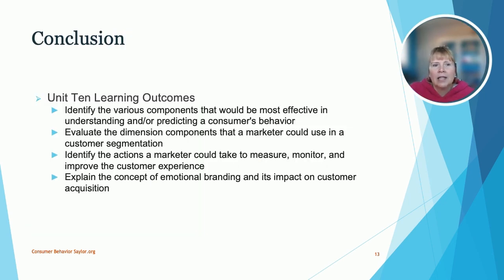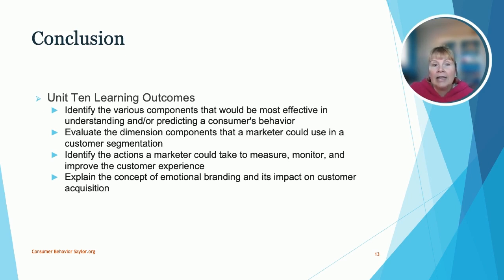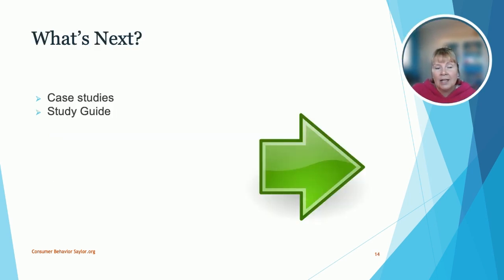In conclusion, here are the Unit 10 learning outcomes. We talked about how you might predict a consumer's behavior. We also looked at the different segmentation of customers and how you can narrow down that target market. We talked about actions that a marketer can take to measure, monitor, and improve the customer experience. And we talked about emotional branding and how it impacts new customers, existing customers, and customer loyalty. Here are some additional resources for you: case studies, a study guide, and things to help with test preparation.